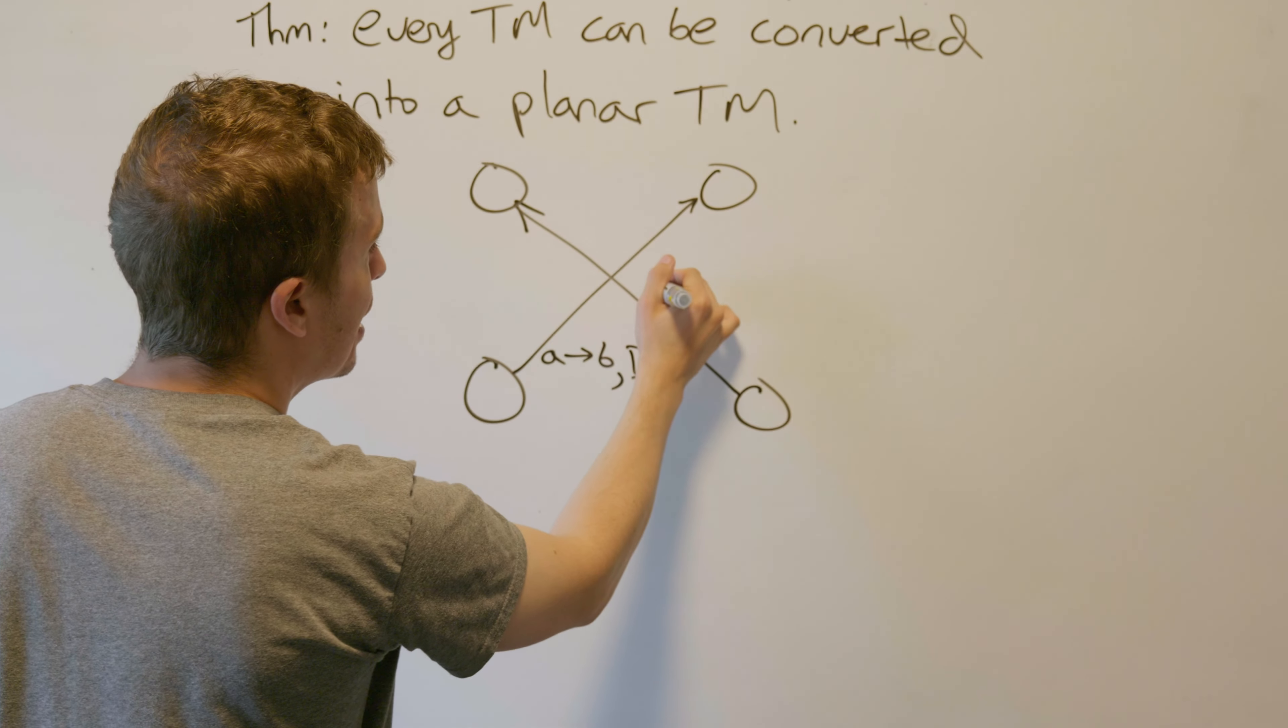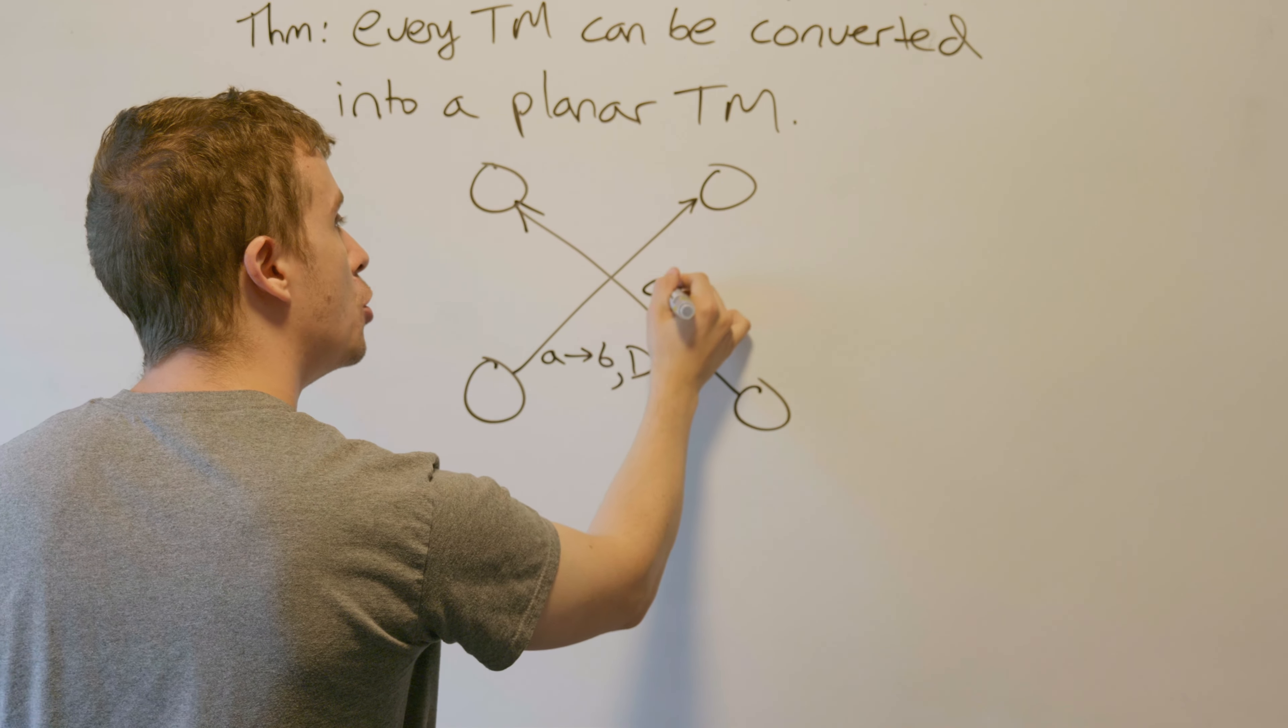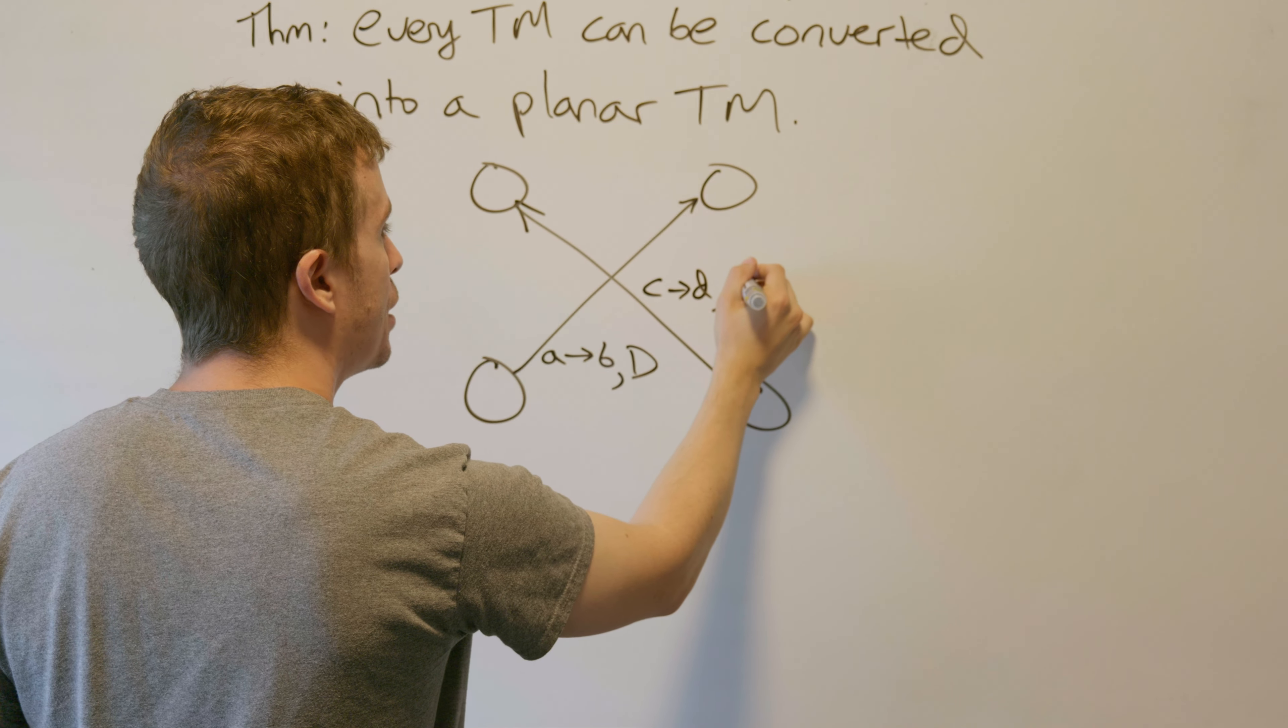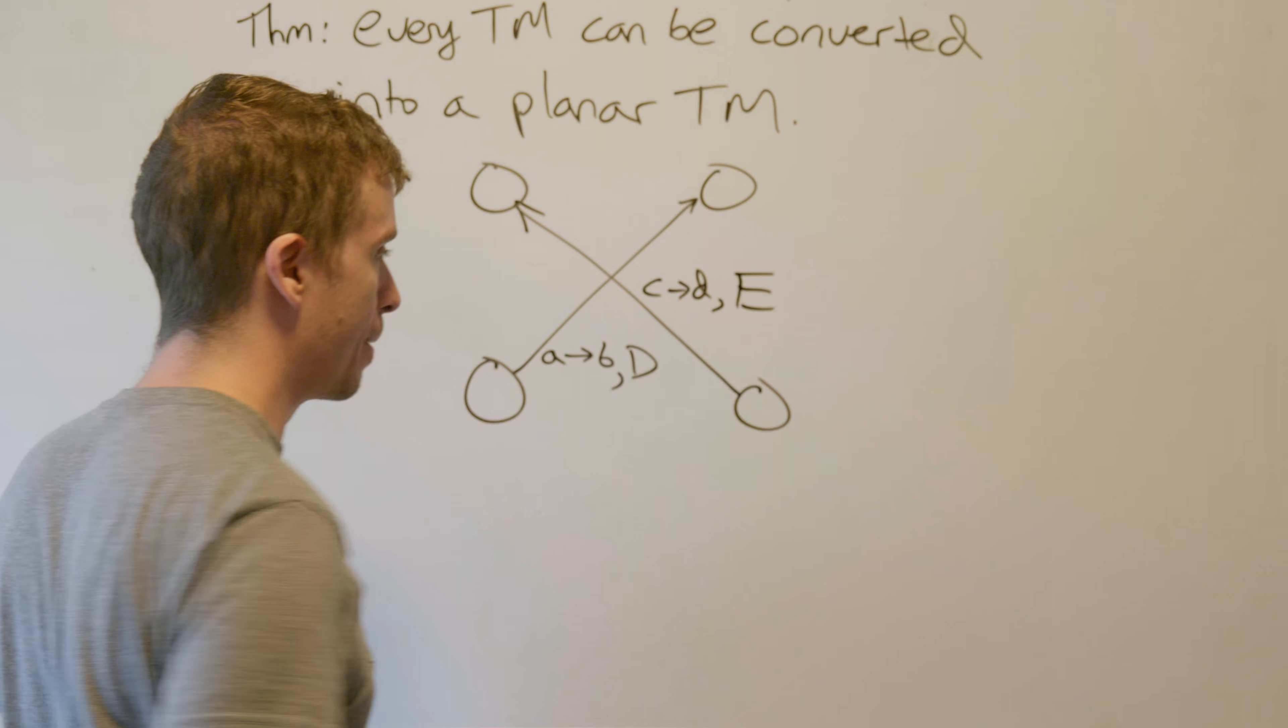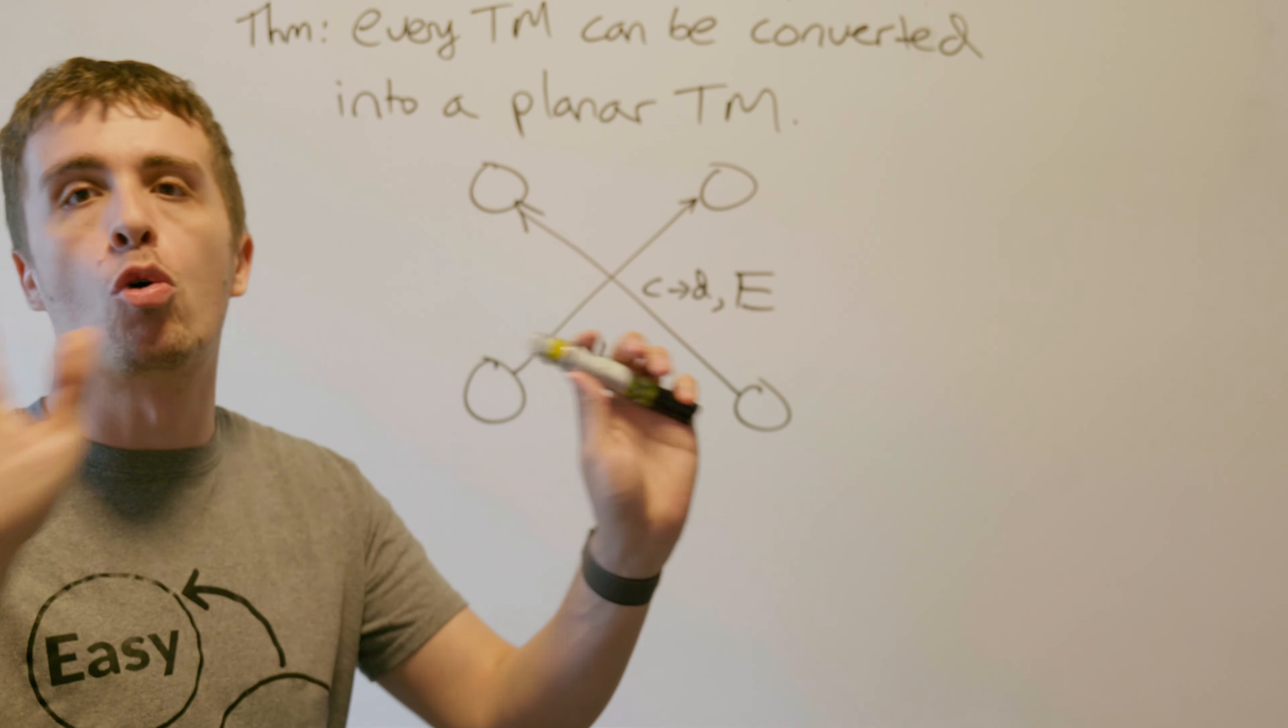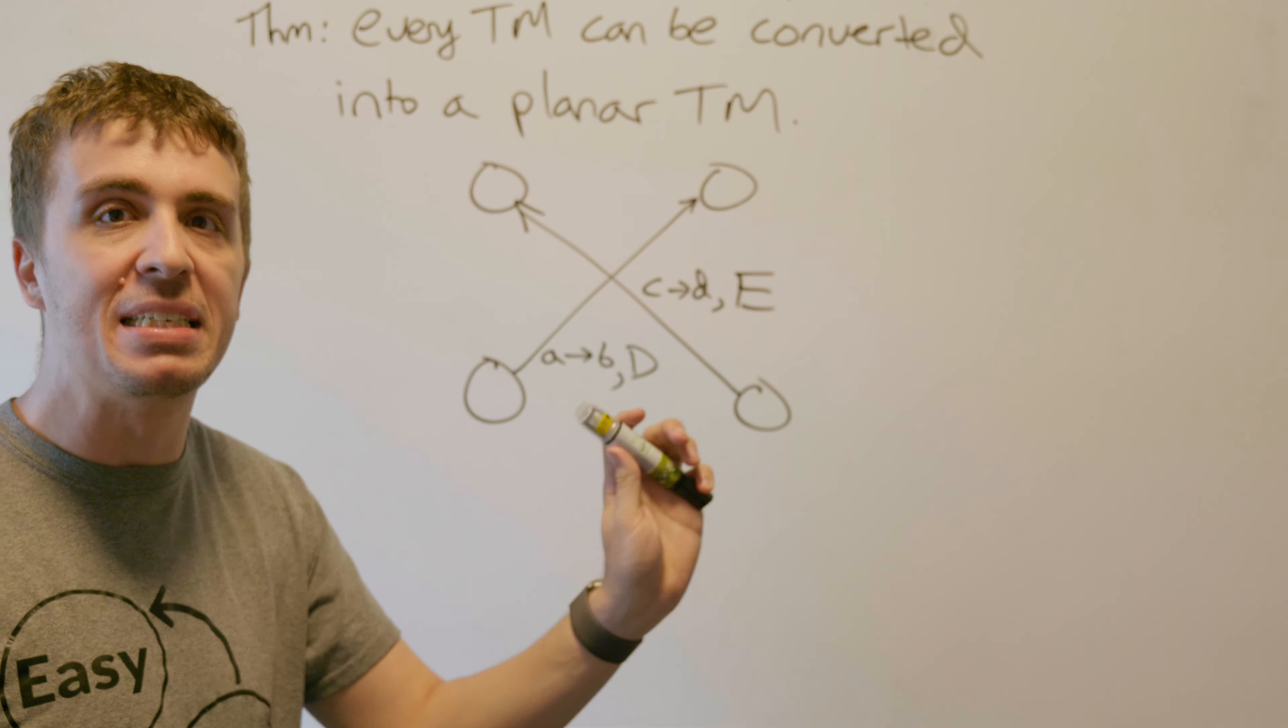And this other one, let's call it read a C, change it to a D, and move in direction E. These transitions can be exactly the same, they can be totally different, I have no idea.